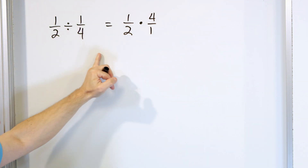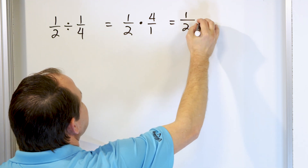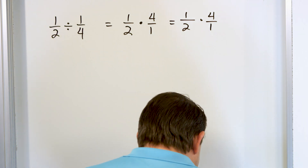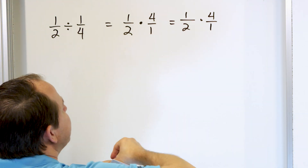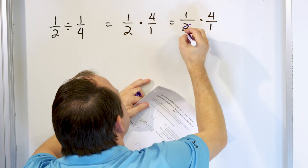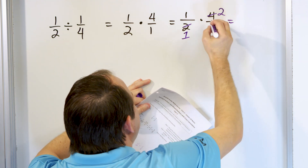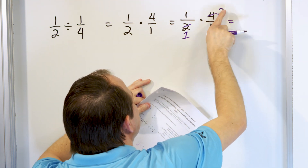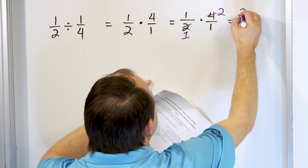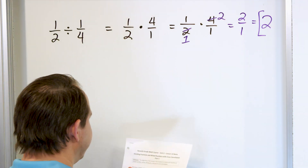The bottom line is every time we turn it into multiplication. Now we can multiply, but we want to use cross-cancellation. Instead of multiplying and then simplifying, we try to simplify first. We have a two and a four — we can divide both by two. Two divided by two is one, and four divided by two is two. We now have these numbers replaced, and we can multiply: one times two is two, and one times one is one, and two divided by one is two. So the answer is two.